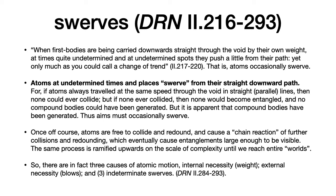There are in fact three causes of atomic motion. Two are necessary: the internal necessity of weight or gravity, which causes atoms to move straight downwards, and the external necessity of blows or collisions. Then there is this unnecessary movement — it's hard to even consider it a cause — but there is this indeterminacy in the overall system that we call swerves.